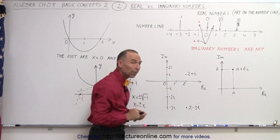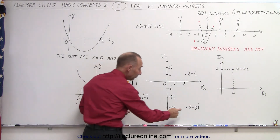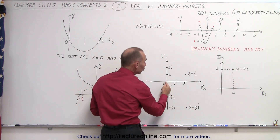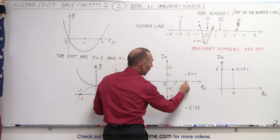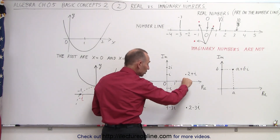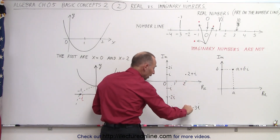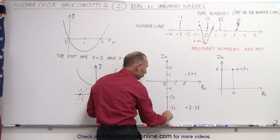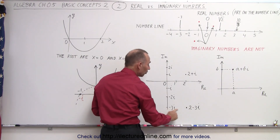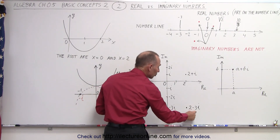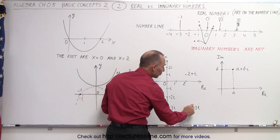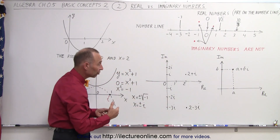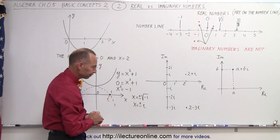Here's another dot representing a different imaginary number. It's two units to the right on the real axis but three units down below in the negative direction on the imaginary axis. So this is two minus three i. That's a visual dot representation of an imaginary number.